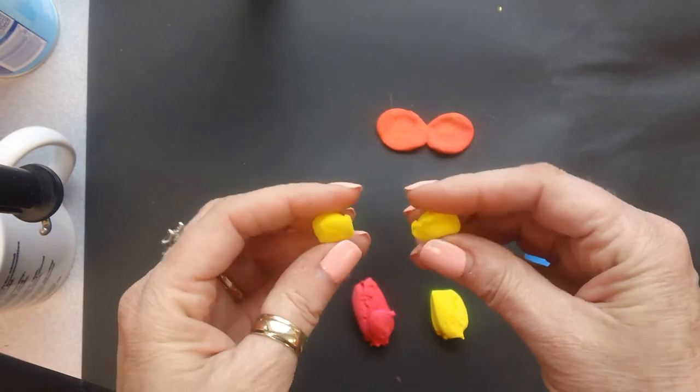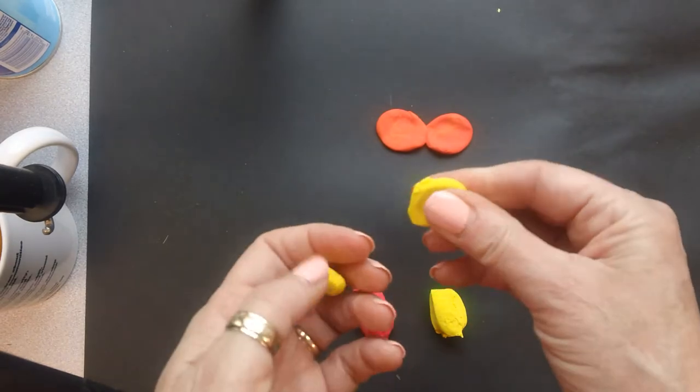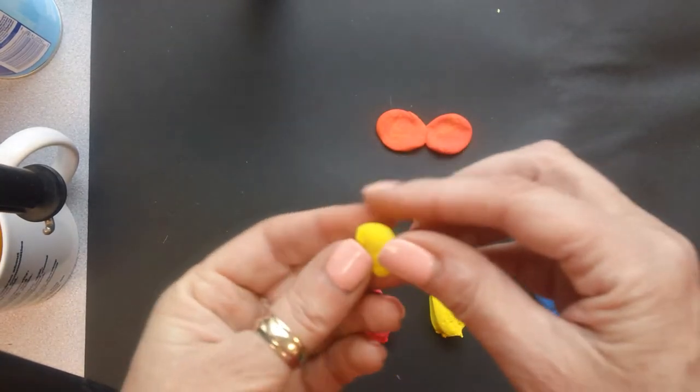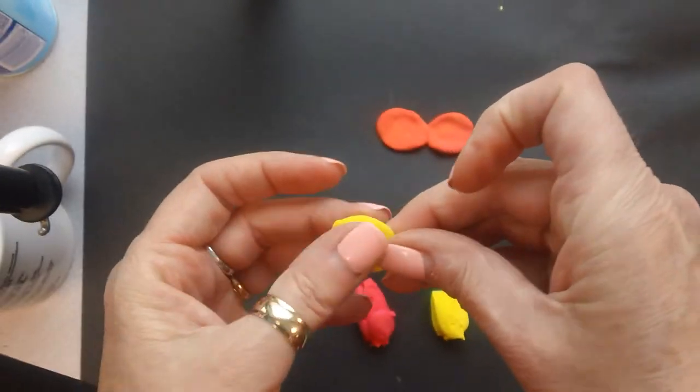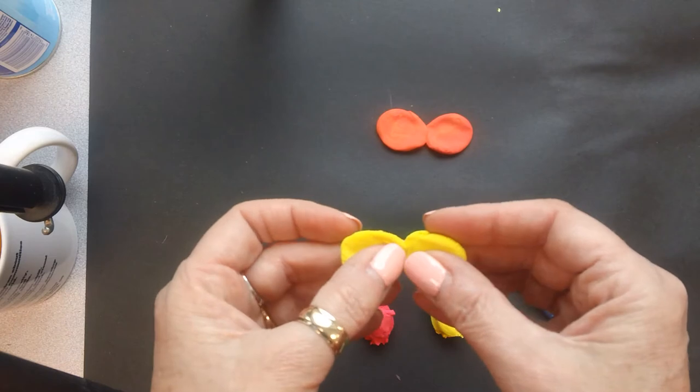I've got my two smaller wings. So now I'm going to take it, press it, shape it, press it, and shape it. This one's a little small, but that's okay. Touch these two together.